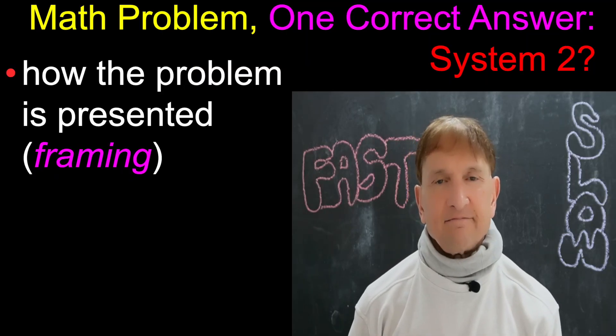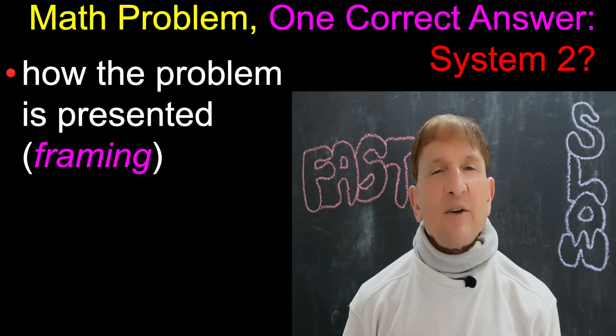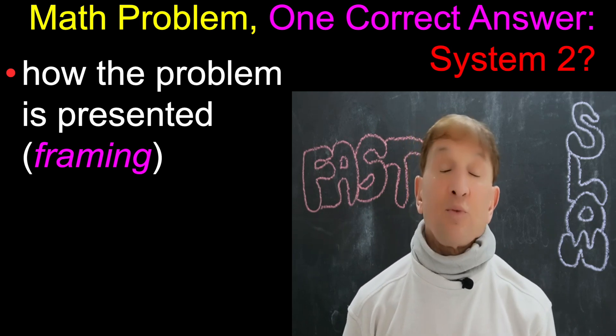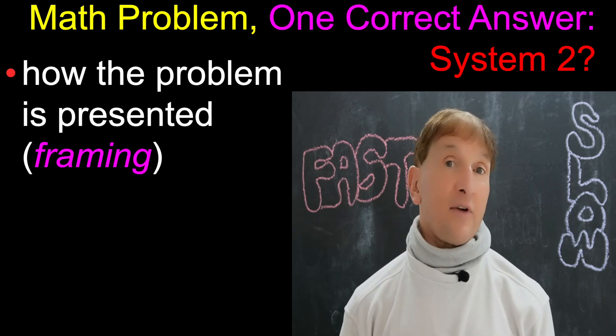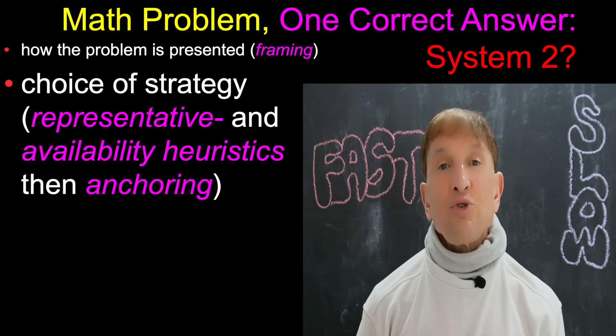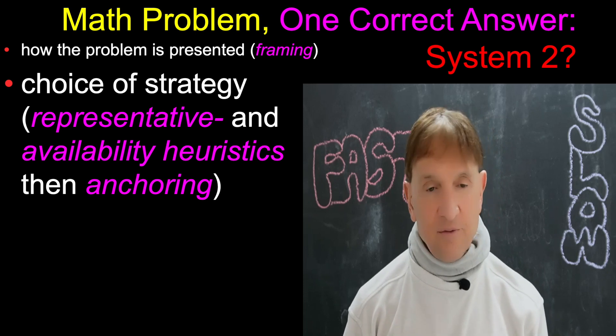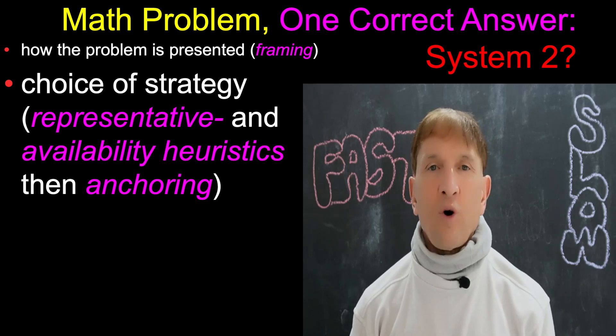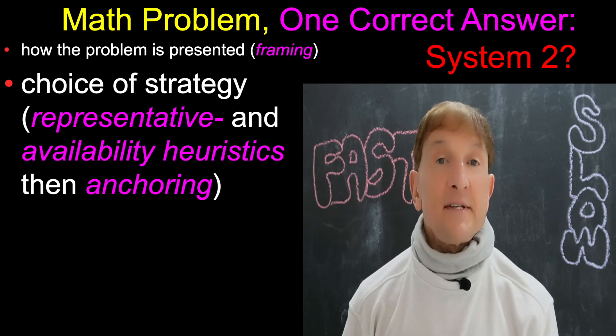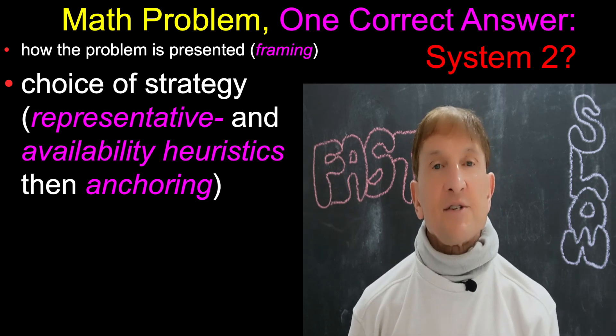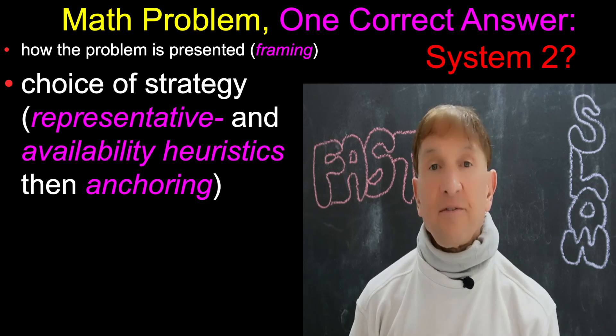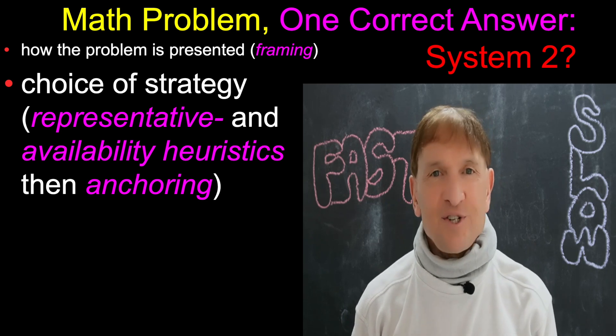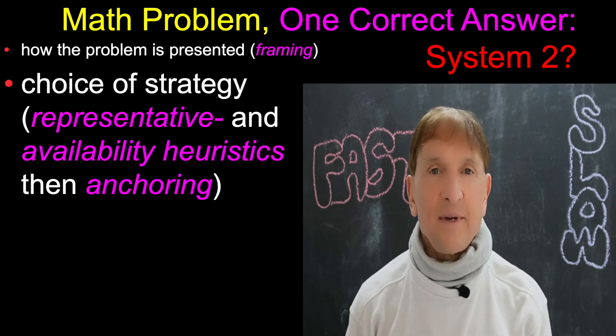Consider a mathematician. A man, for instance, how does he approach a problem? The first consideration is the mathematician will look at how the problem is presented. That's framing. And then he will choose a strategy to solve it. And that strategy may be based on representative or availability heuristics. Methods he's used in the past to solve that type of problem. And often, someone as an experienced mathematician knows exactly what strategies to draw on. System 1 is helping him.